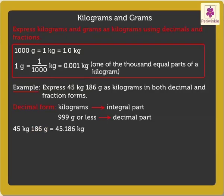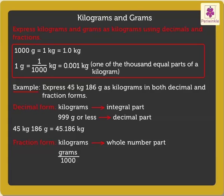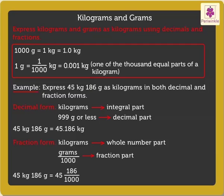Now, let us express it in fraction form. Kilograms form the whole number part and grams are written in the numerator with 1000 in the denominator to get the fraction part. So, 45 kilograms 186 grams is expressed as 45 and 186 upon 1000 kilograms as a fraction.